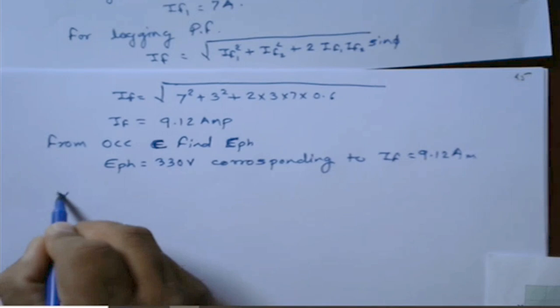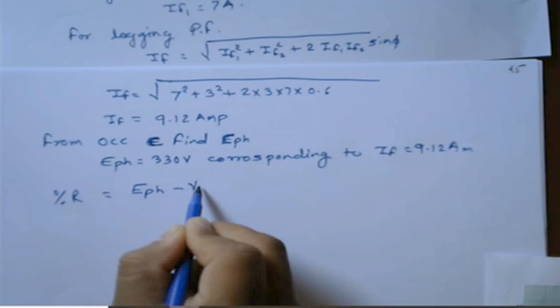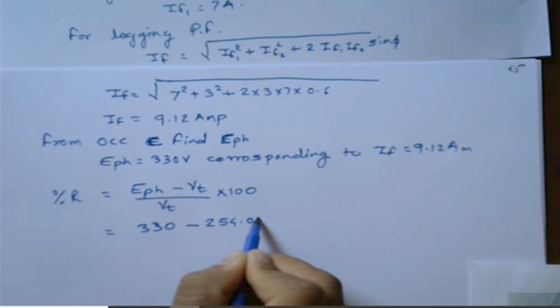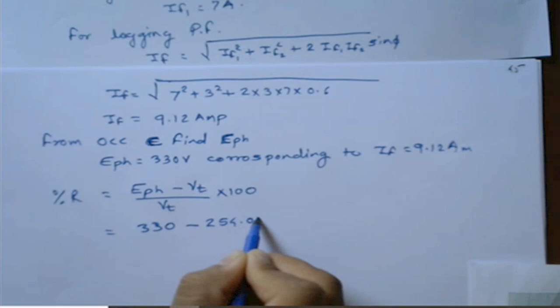Last step: percentage voltage regulation = (Eph − Vt) / Vt × 100 = (330 − 254.03) / 254.03 × 100 = 29.9 percent, approximately 30%. This is the percentage voltage regulation.